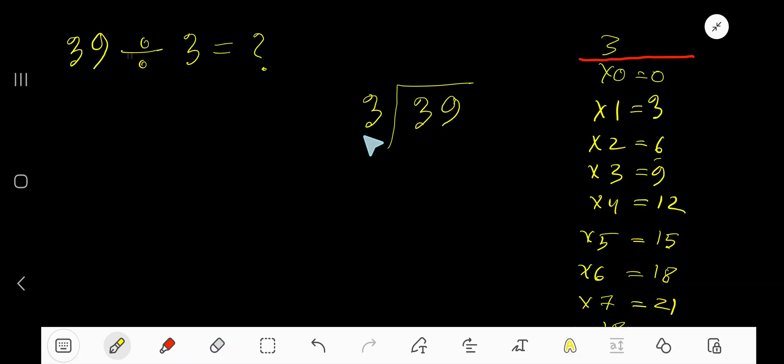39 divided by 3. Here 3 is a divisor, so we need the multiplication table of 3: 3 times 0 is 0, 3 times 1 is 3, 3 times 2 is 6, 3 times 3 is 9. To find the multiplication table of 3 easily, just add 3 with the previous step: 0 plus 3 is 3, 3 plus 3 is 6, 6 plus 3 is 9.